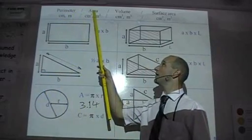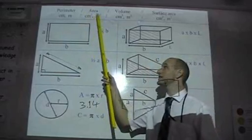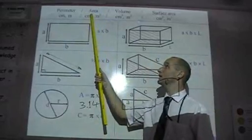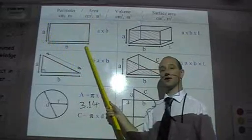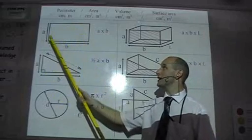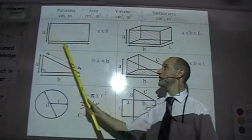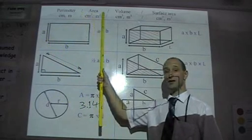Moving on now to area. Units of area are centimetres squared, millimetres squared, metres squared. The squared, the little two, is telling us there's two lengths that we always multiply together. For a rectangle, to find the area of a rectangle I just do A times B. And the answer would be units squared.